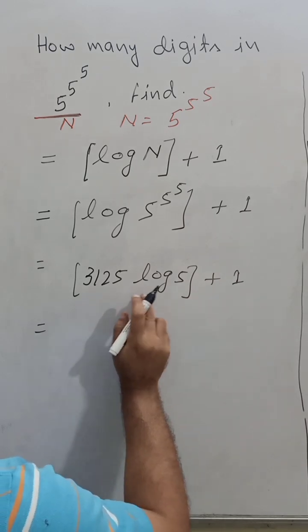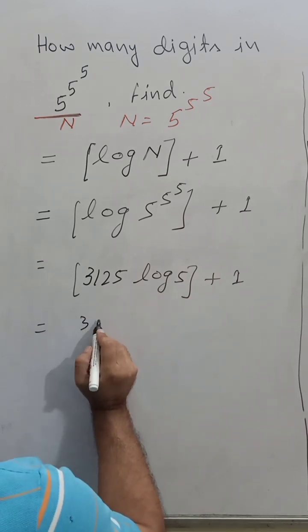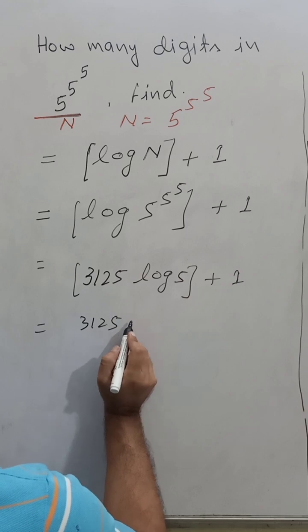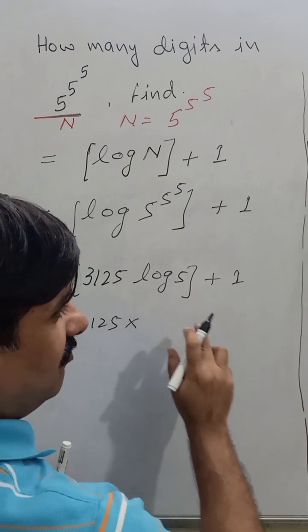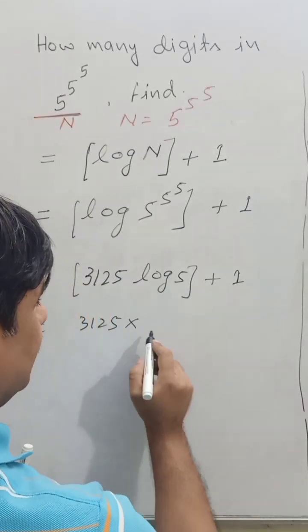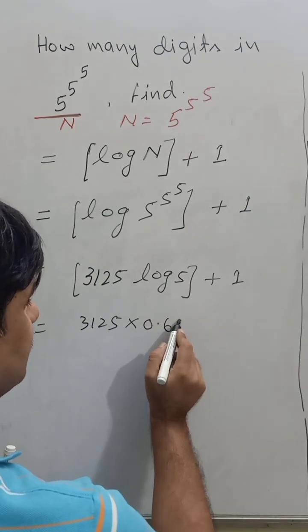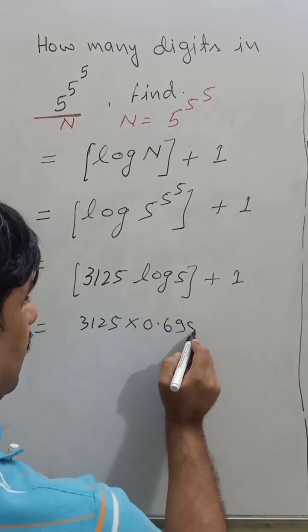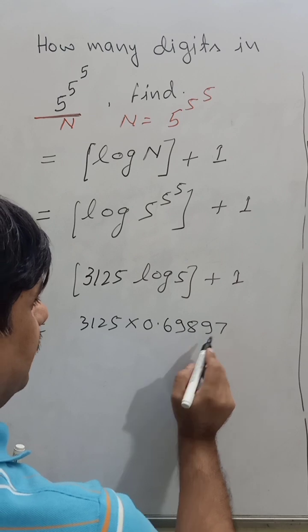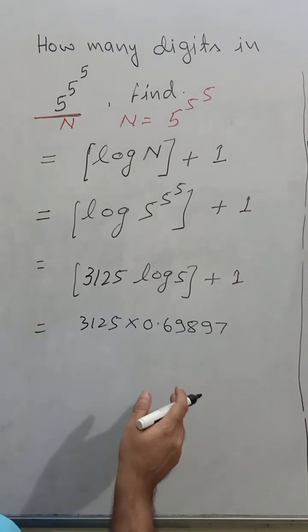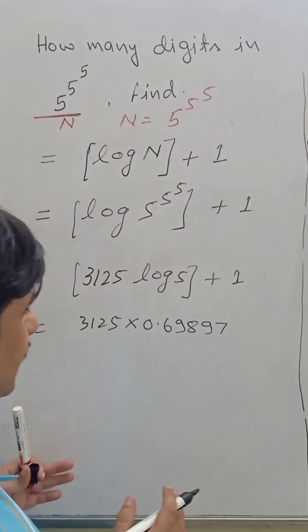It is 3125 into log 5. 3125 into the value of log 5 is 0.69897 approximately - I found this by calculator.